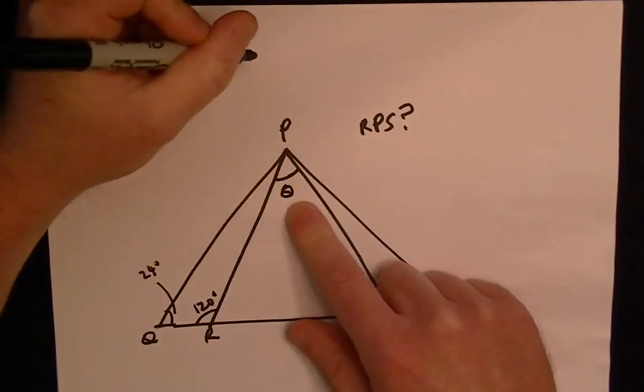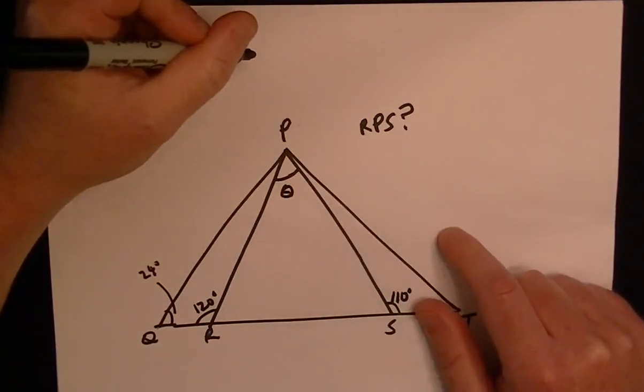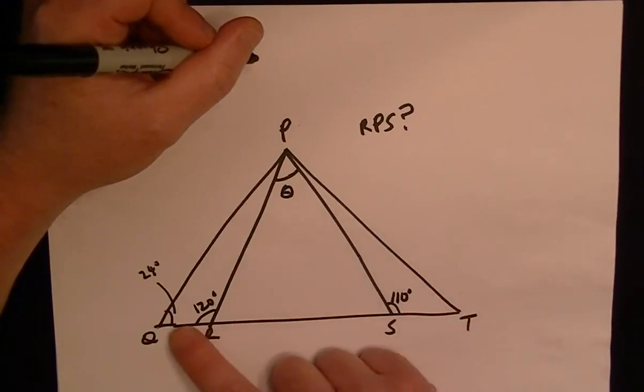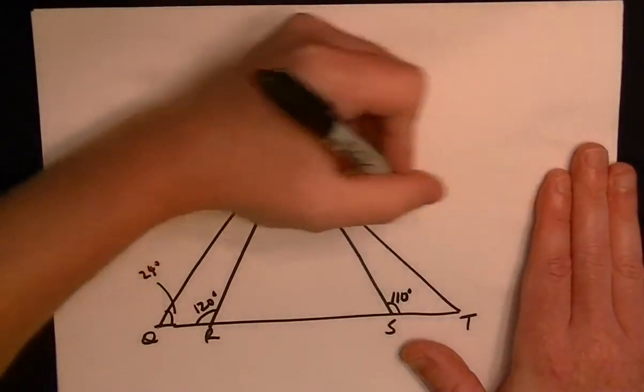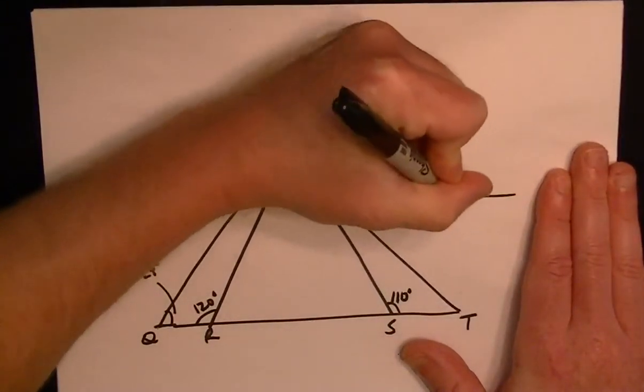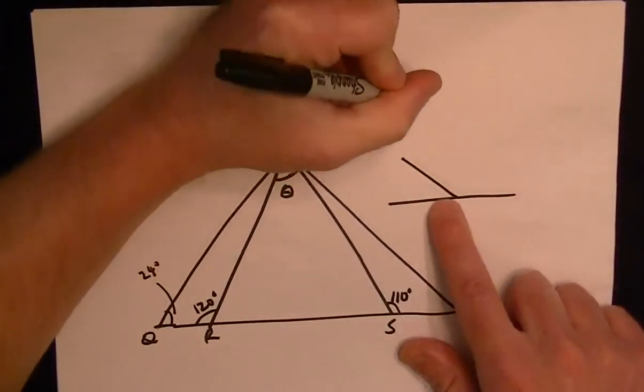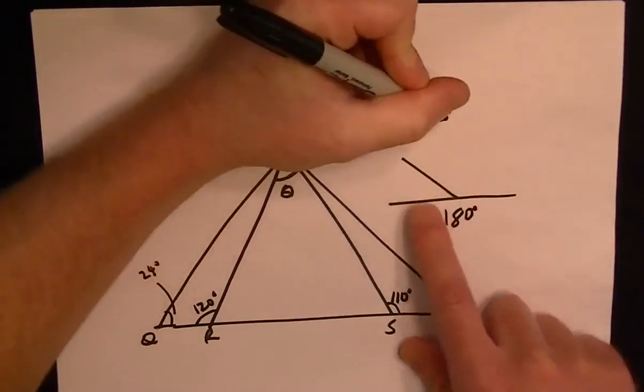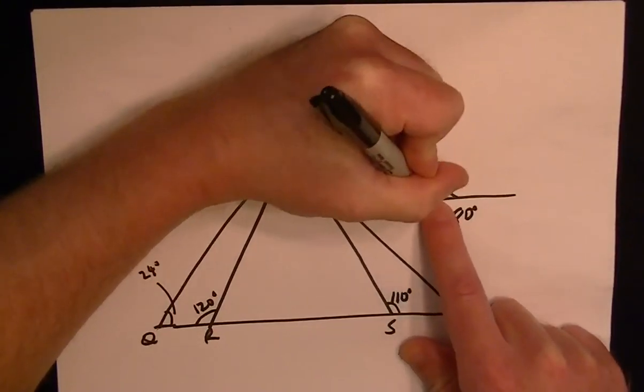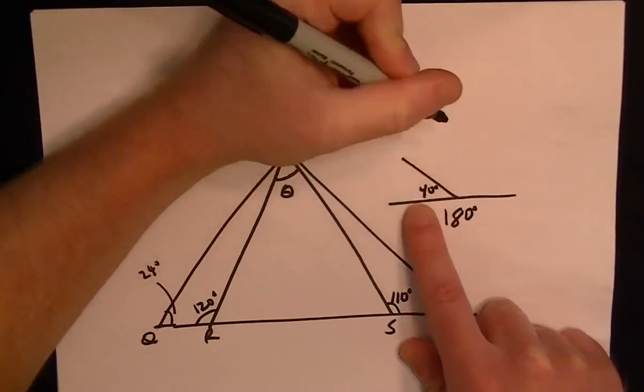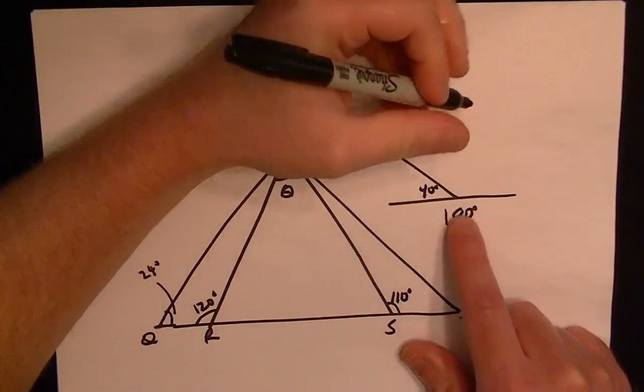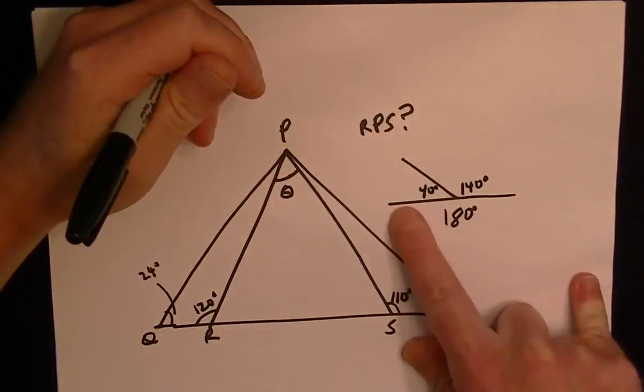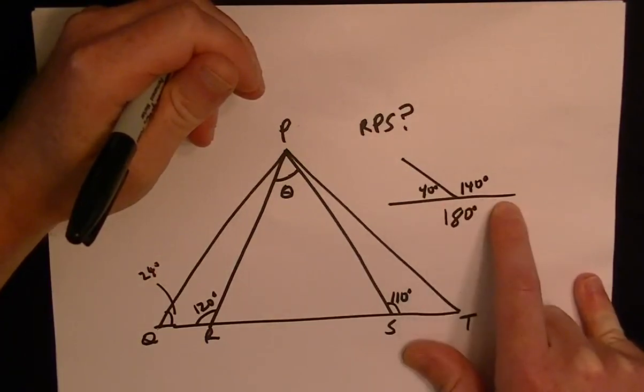So the way to get this is you have to understand that when you have a straight line and an angle, a straight line is 180 degrees. So whatever angle this is, let's say it's 40 degrees, on the other side it has to be 140 degrees. So we're using the knowledge that a straight line has an angle of 180 degrees.